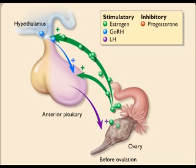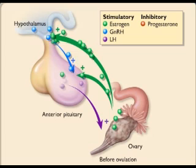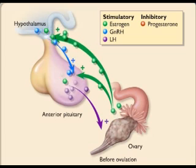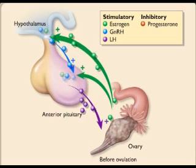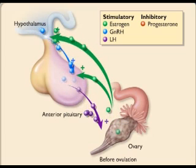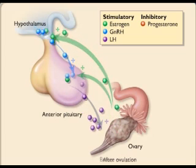The levels of gonadotropin-releasing hormone and luteinizing hormone increase in the blood due to this positive feedback effect.